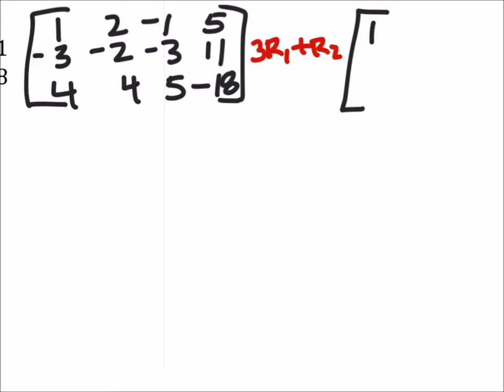So my top row, again, I haven't changed any of those numbers. 1, 2, negative 1, 5. Should have given myself more space. But here's the thing is, so in that red, I say I got 3 times row 1, so I take, I got 1 times 3, plus row 2, so plus that negative 3, bam, there's that 0.